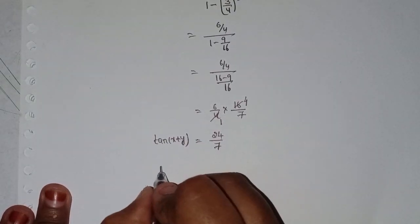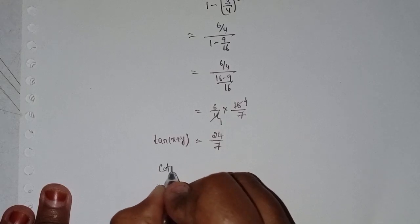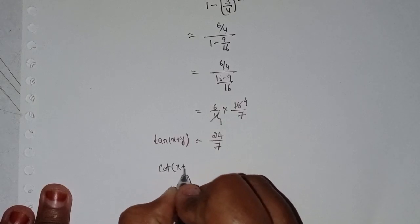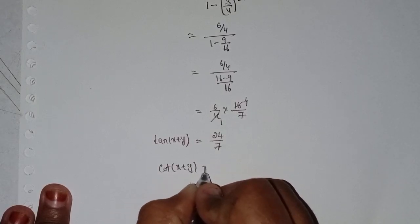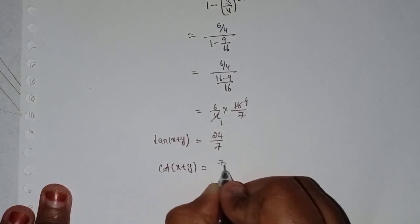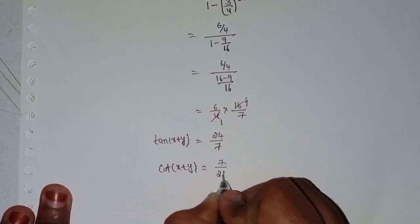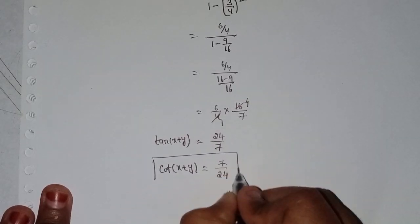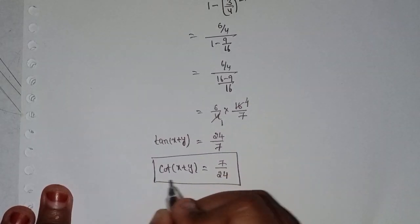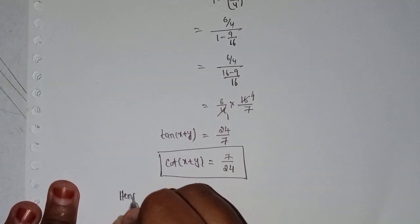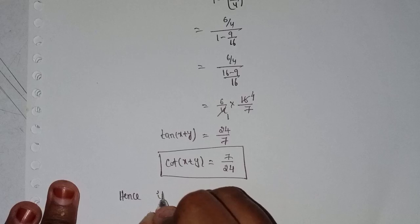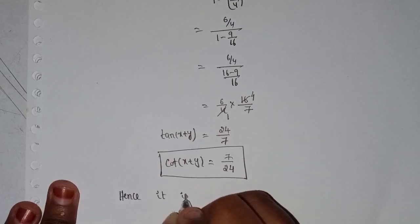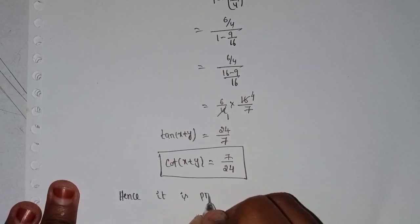The reciprocal of tan(x plus y) gives cot(x plus y) equal to 7 by 24. This is the second part. Hence, it is proved.